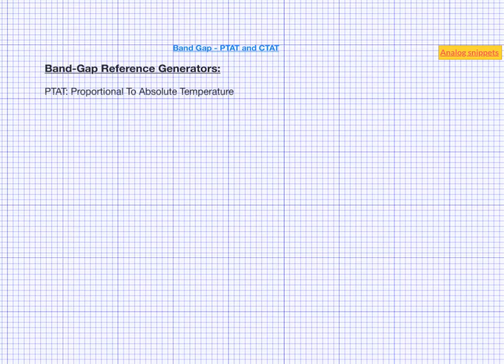PTAT stands for proportional to absolute temperature. Here absolute temperature means temperature in Kelvin scale. So PTAT voltage or current is a quantity which is proportional to absolute temperature.